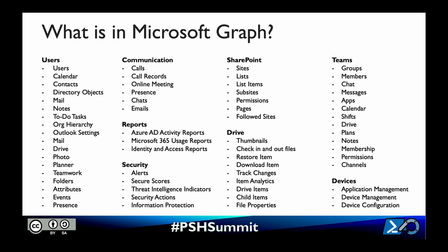So what's in the Microsoft Graph? Anything within the Microsoft 365 suite of products can be found within the Graph API. We can get events from a user's calendar, make changes to those events, and create new ones. We can view organization hierarchy, get presence information, download files from OneDrive, send emails, Teams messages, and view organization security alerts. It also includes built-in reports like Azure AD activity reports, Microsoft 365 usage reports, and identity and access reports.